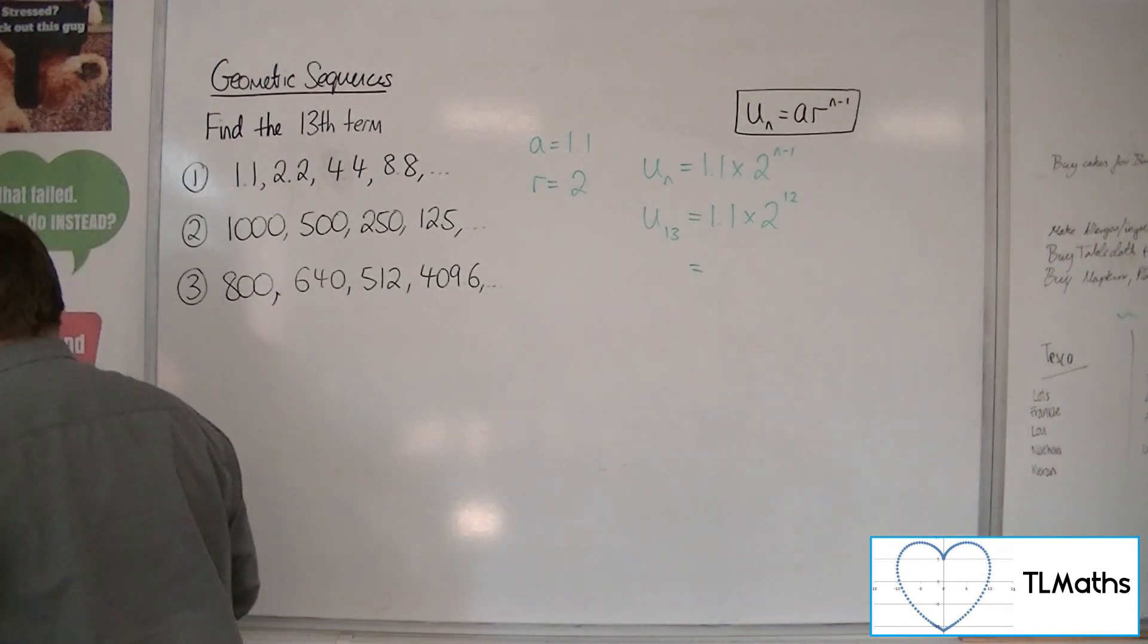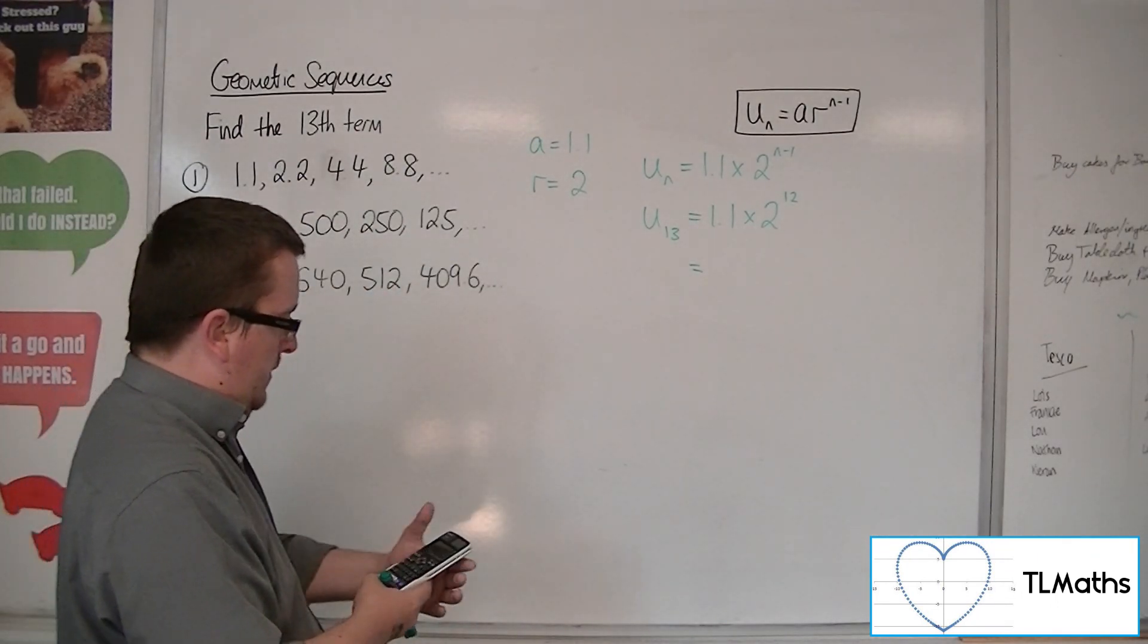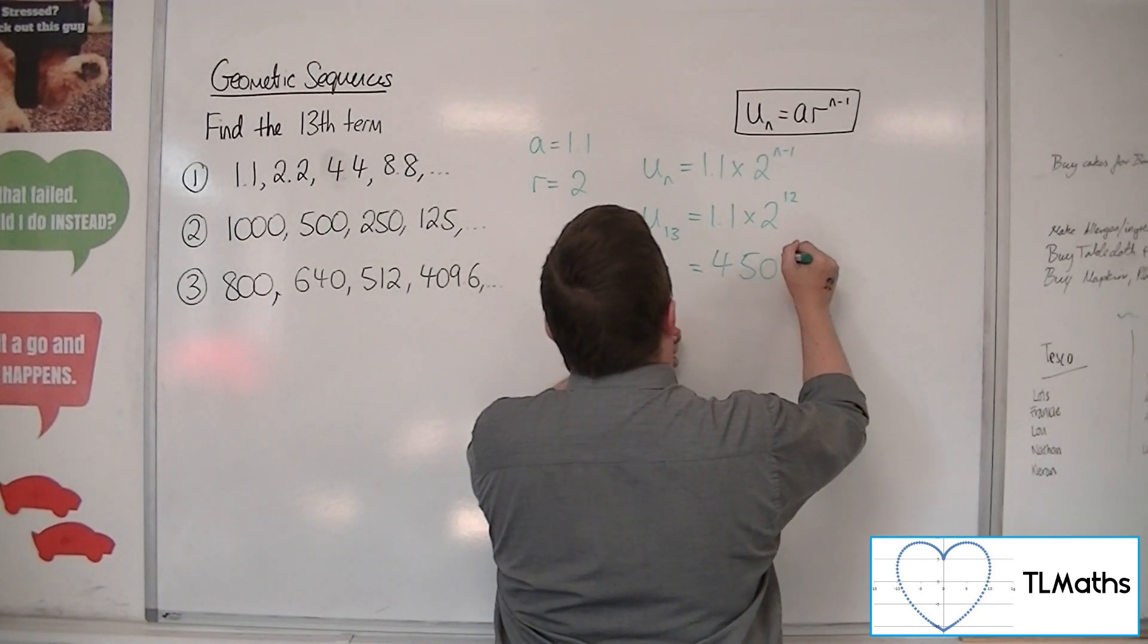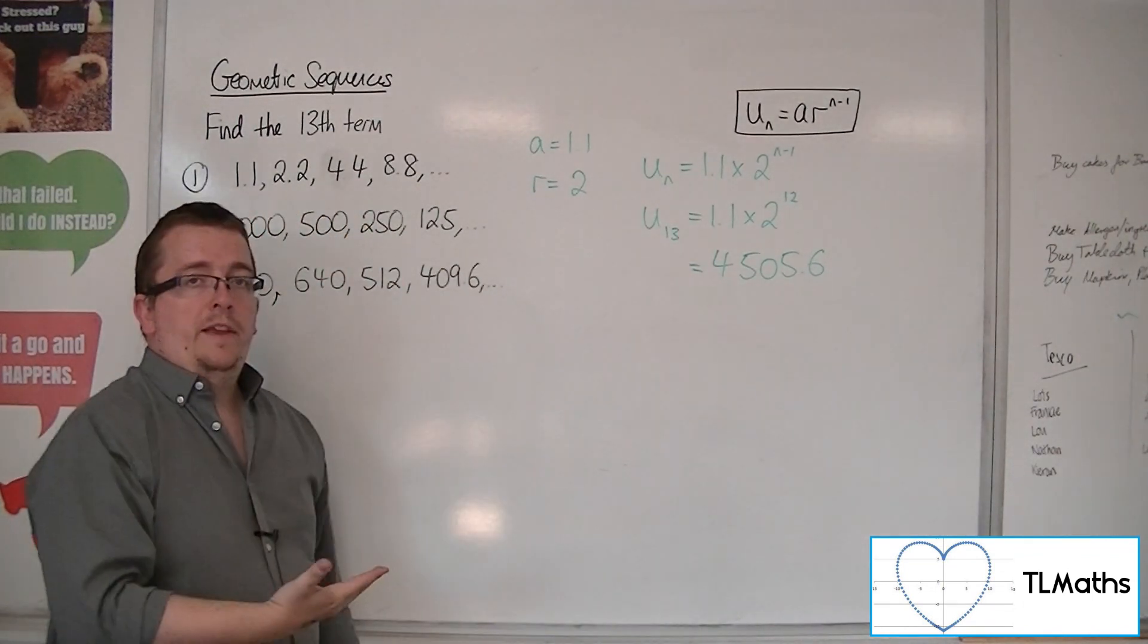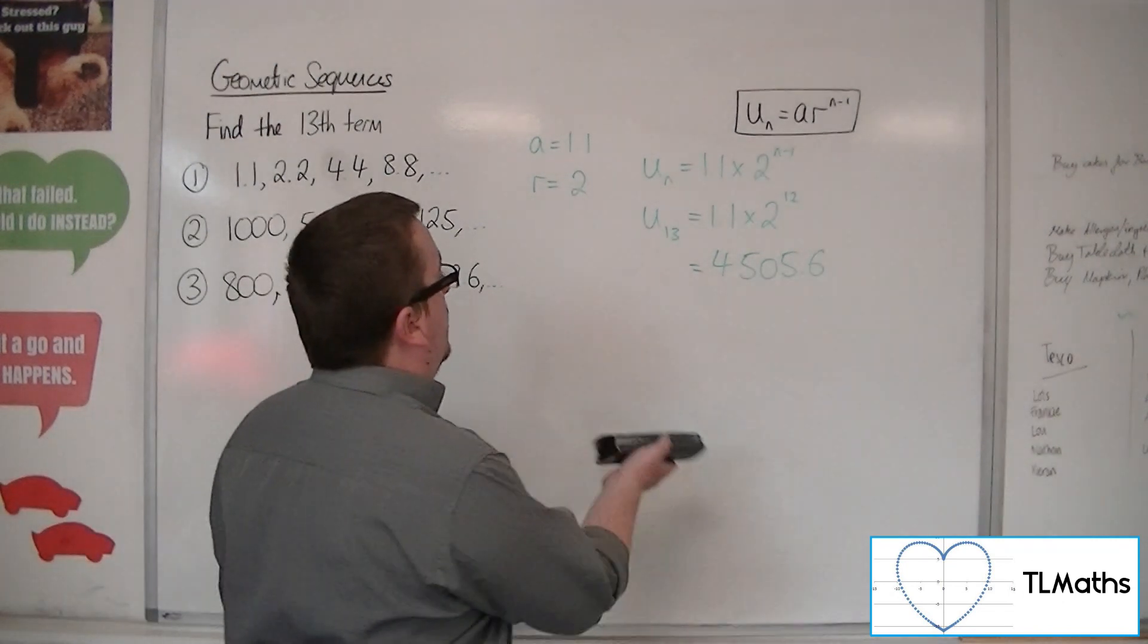So, 1.1 times 2 to the power of 12 is equal to 4,505.6. And that is my 13th term. So that's the process that we need to go through.